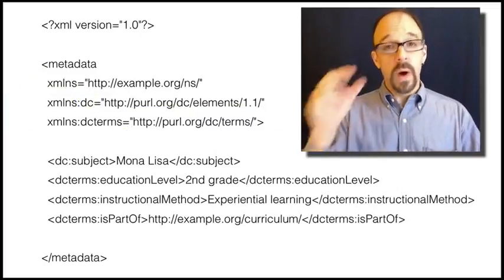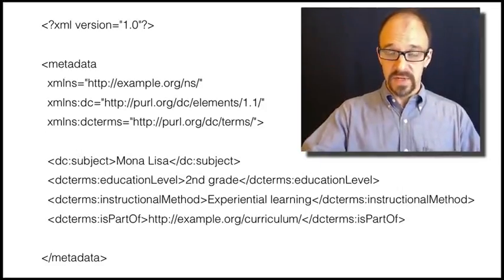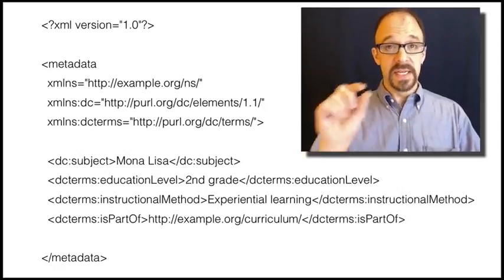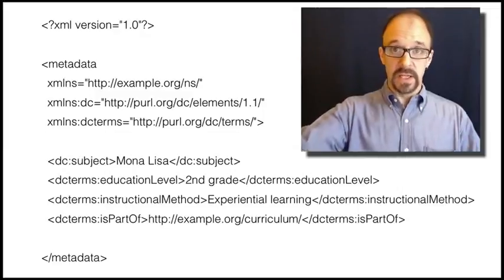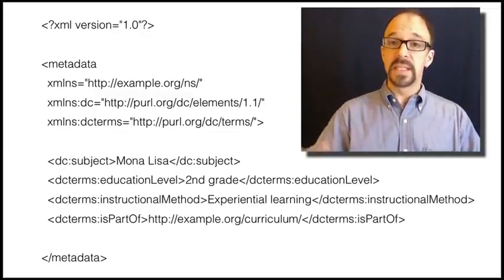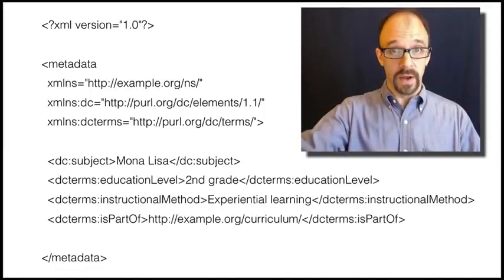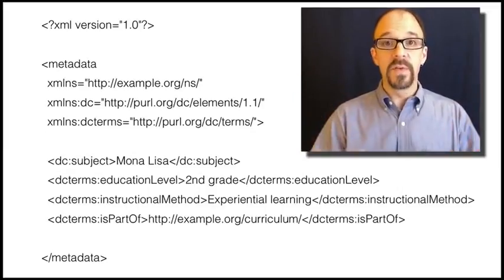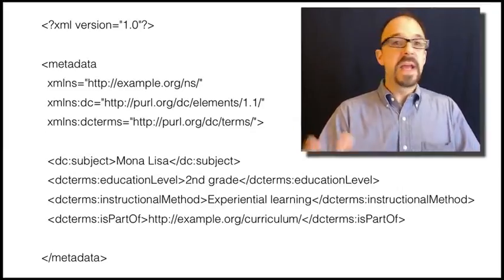So if you want to use the extended set of Dublin Core terms, this is how it's done: DC terms colon term. And you must declare the terms namespace, even though that's the same file that you declared before just for the Dublin Core elements. But what if you want to go beyond this and make up your very own metadata schema?